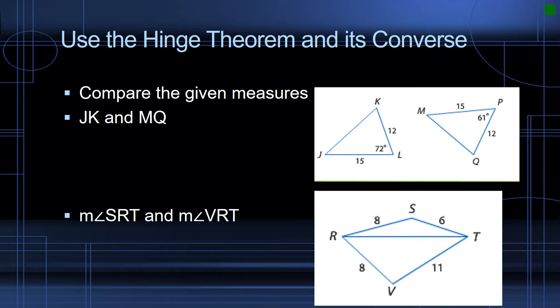Now the converse of the Hinge Theorem is, you could also say, a side-side-side inequality. It's basically saying if you've got sides for which an included angle would be, but the angle opposite one is longer than the other, then the triangle that has the opposite side that is longer is going to have the greater angle measure, or vice versa, the lesser angle measure.